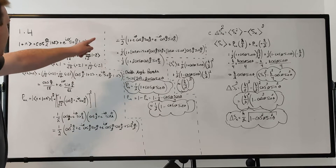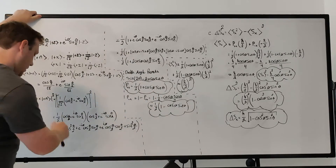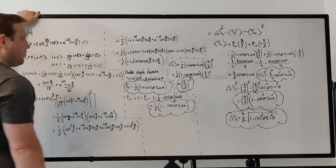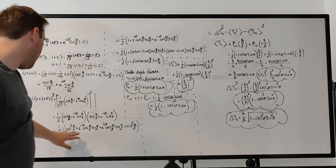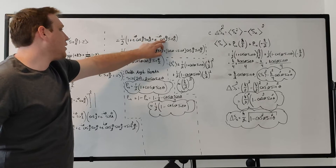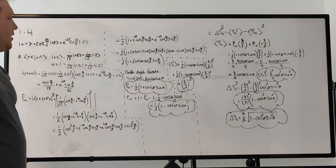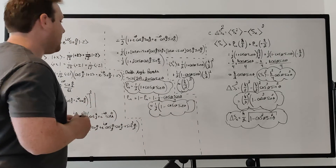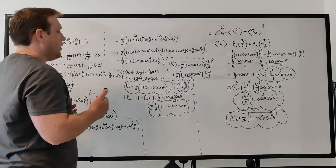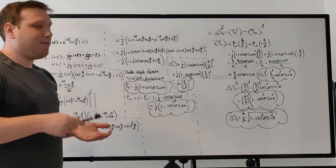The cosine squared of theta over 2 plus sine squared of theta over 2 just becomes 1 from the Pythagorean identity. The remaining two terms involve e to the i phi and e to the minus i phi. Using Euler's formula, e to the i phi equals cosine phi plus i sine phi, and e to the minus i phi equals cosine phi minus i sine phi.